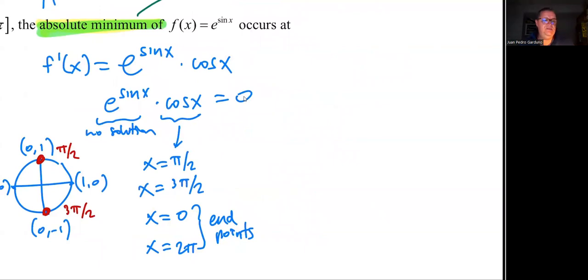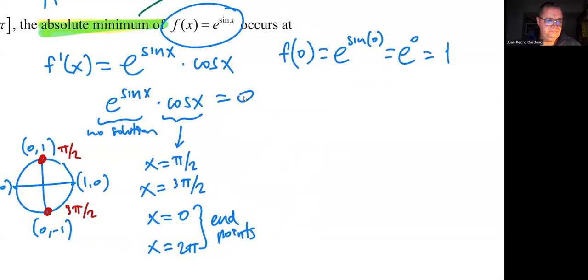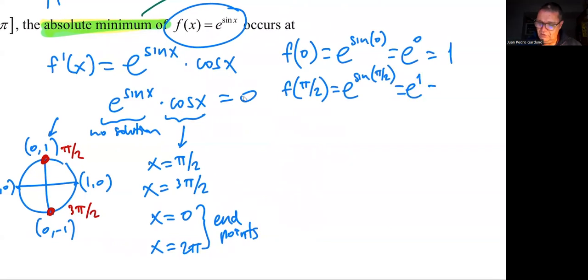I have four candidates I need to test, and I need to look at which one is the absolute minimum. Let's take a look. So we're going to evaluate f, so this function, at zero. e^(sin 0). Sine of zero is zero. So that's going to be e^0, which equals one. Then we have f(π/2). e^(sin(π/2)). Sine π/2 is the y value up here. So that would be e^1, which is just e.